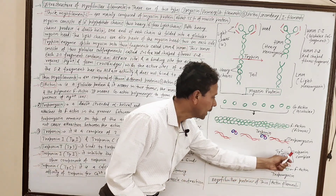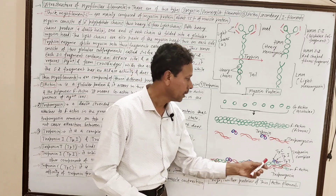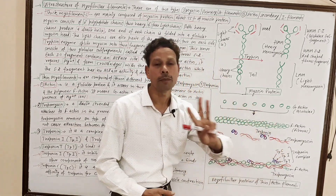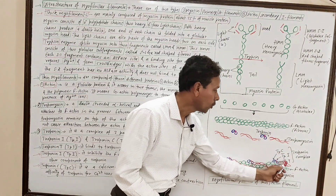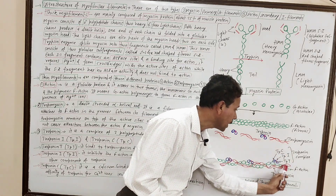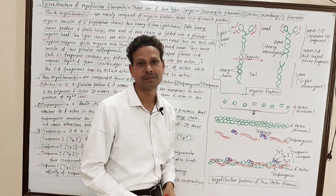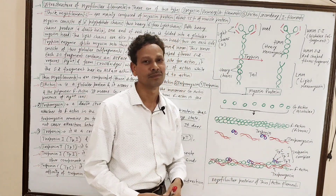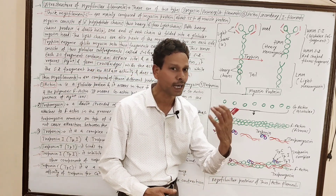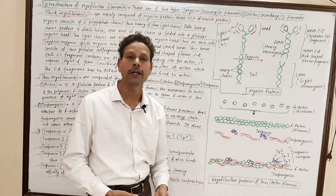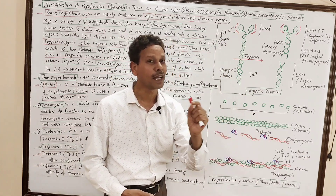The third protein is troponin. Each troponin has three polypeptide chains: Troponin C, Troponin I, and Troponin T. These three polypeptide chains of troponin produce a complex — that is the troponin complex. Troponin C has a strong affinity to bind calcium ions, because in muscle contraction, calcium ions play an important role. In tomorrow's lecture, we will discuss the role of calcium ions in muscle contraction.